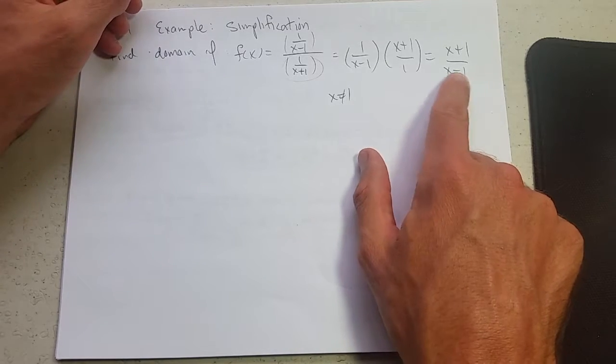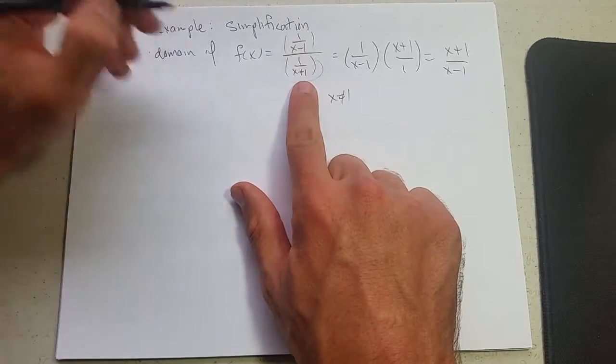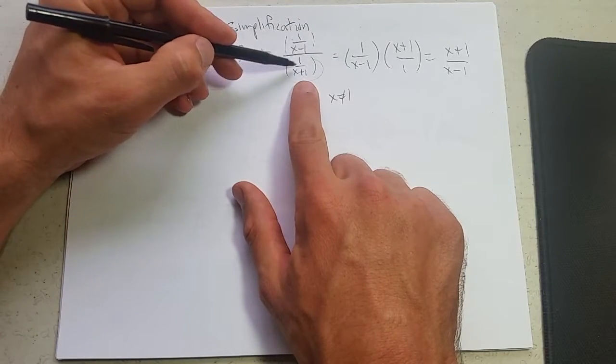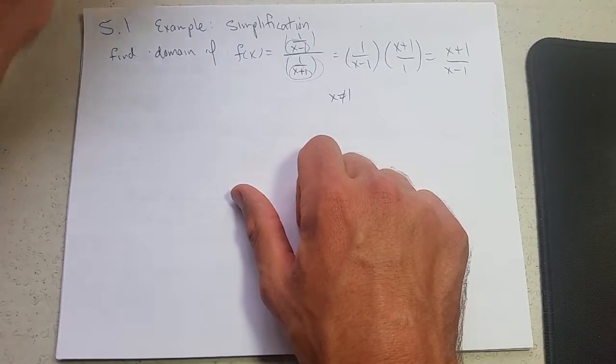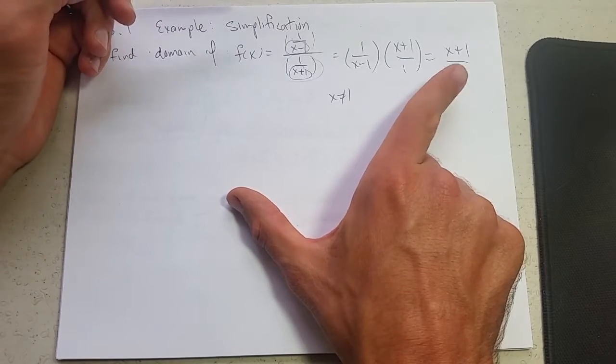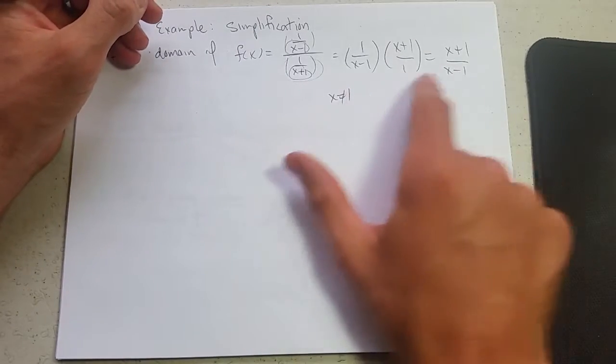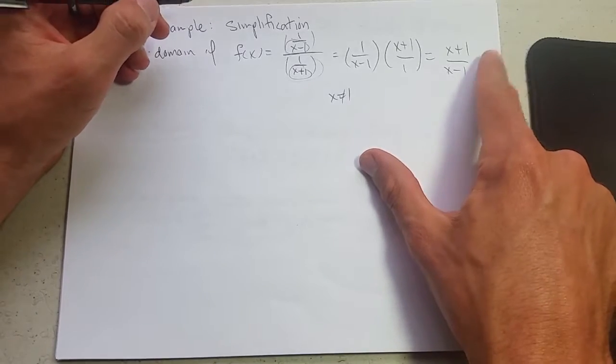If we backtrack to where we started, well I actually have this is a denominator and this is a denominator. When I simplify it, I lose some information. What happens if I plug in negative one over here?